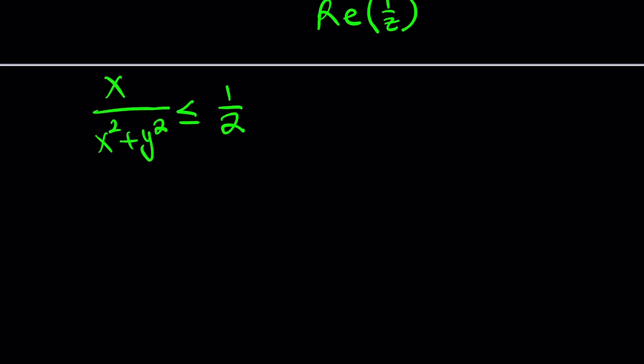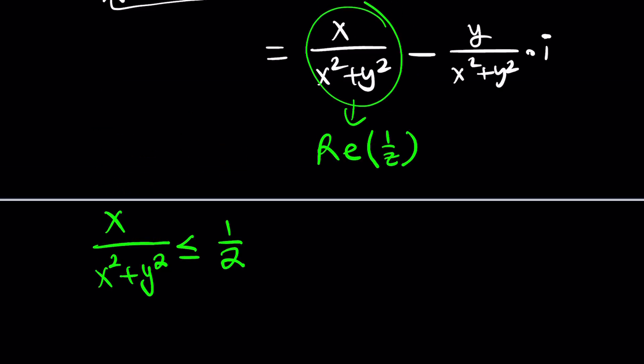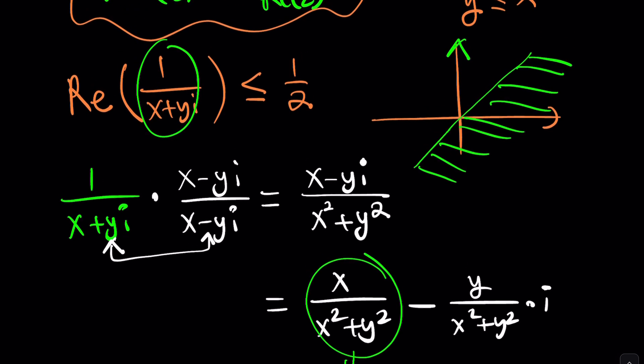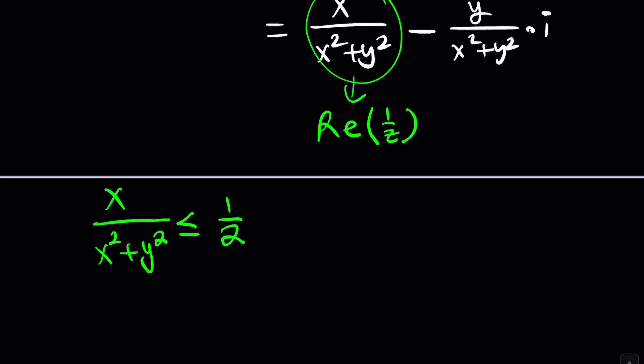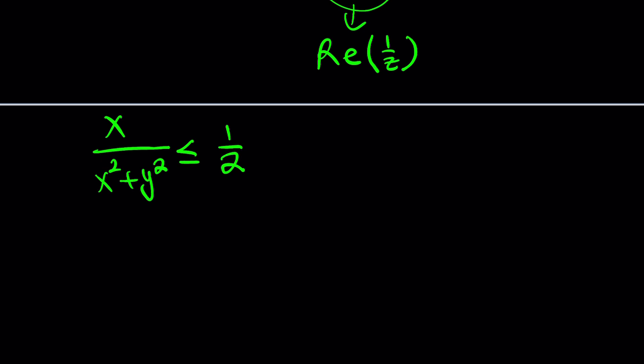Now, notice that X squared plus Y squared cannot be negative. And it can only be zero if X and Y are both zero. But if X and Y are both zero, that means you're dealing with zero, but zero does not have a reciprocal. So this would be meaningless. So we guarantee that X and Y are not both zero. Now, what can we do then? We can just multiply both sides by X squared plus Y squared. When we do that, this is going to cancel out. And now we can multiply both sides by two. This will give us two X and the two and one half are going to cancel out. Two X is less than or equal to X squared plus Y squared.